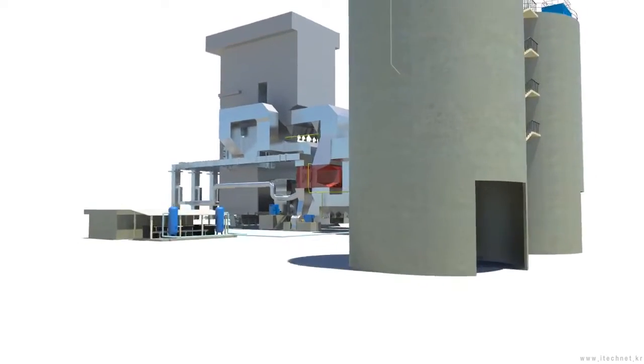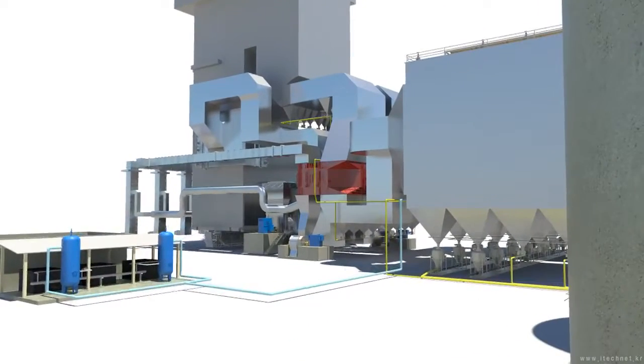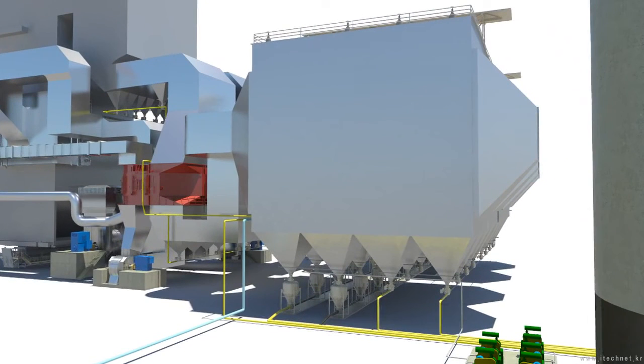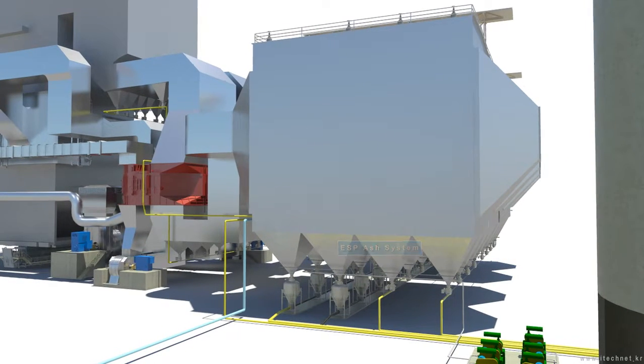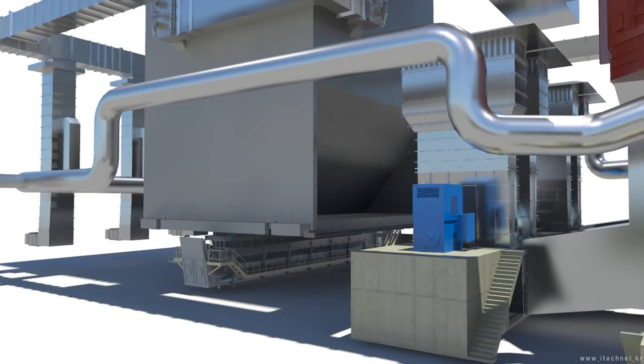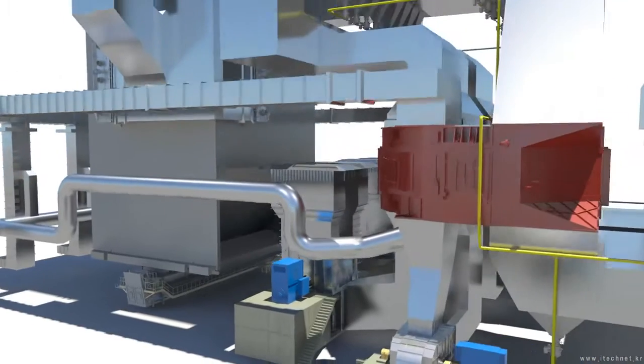The ash system is a system which takes care of the ash being made after the coal is fired at the boiler and consists of electrostatic precipitator ash system, fluidized bed ash system, economizer ash system, and air preheater ash system.